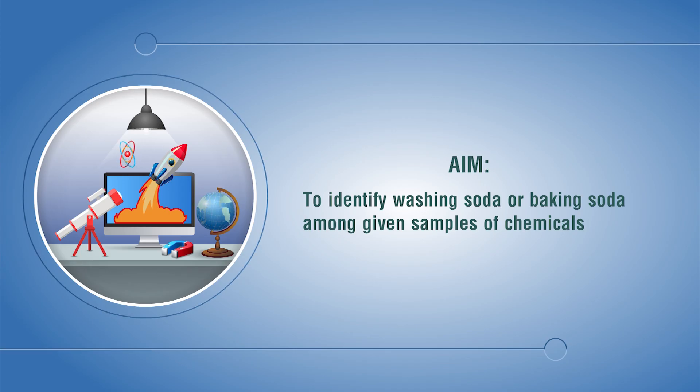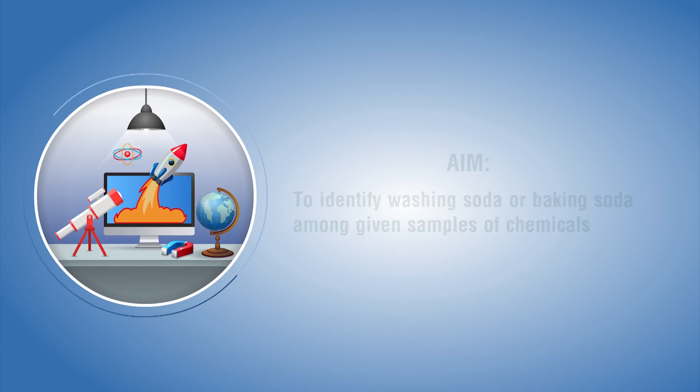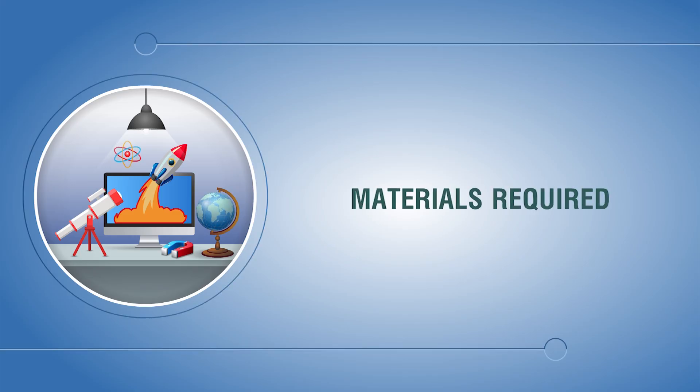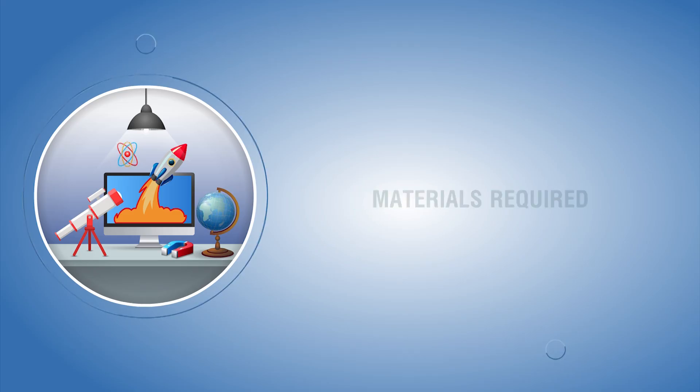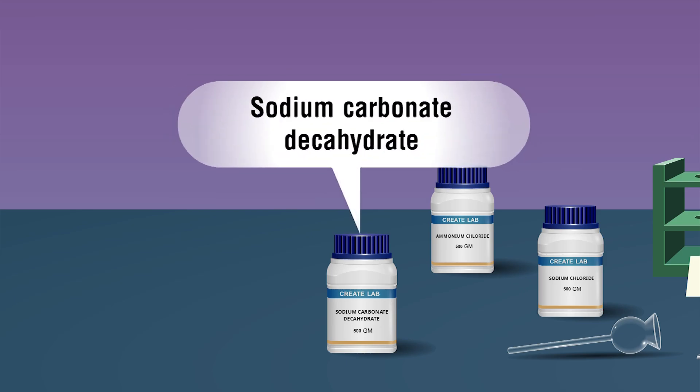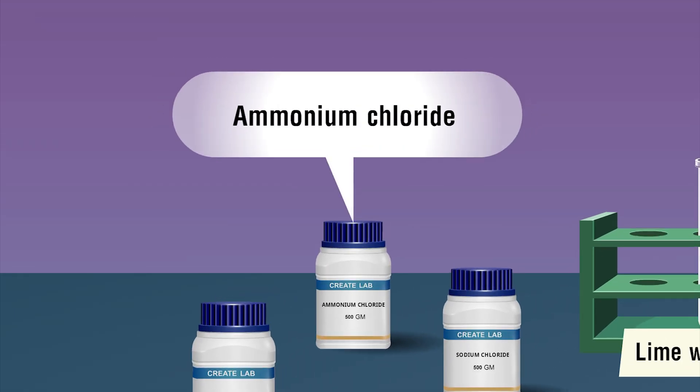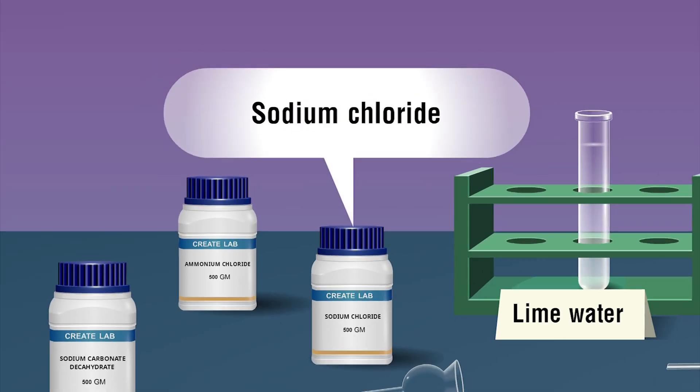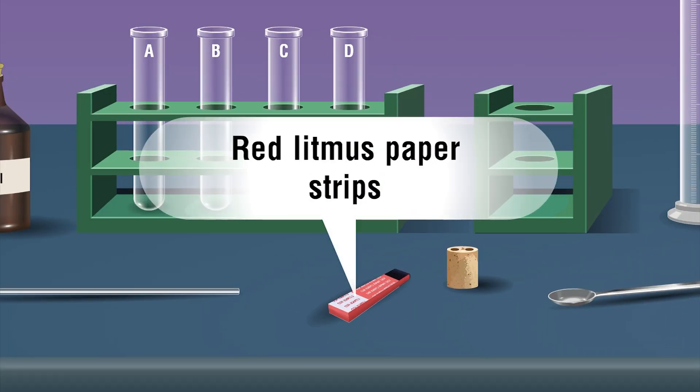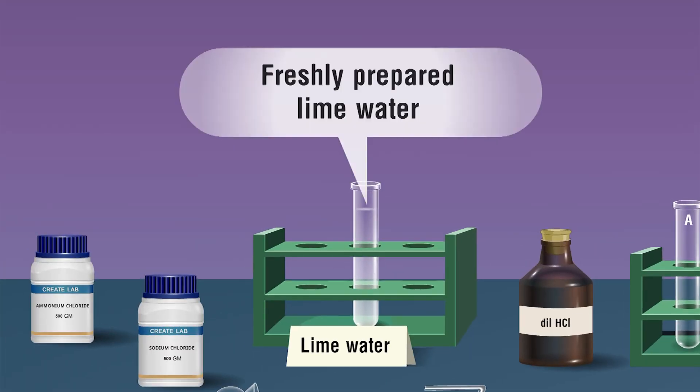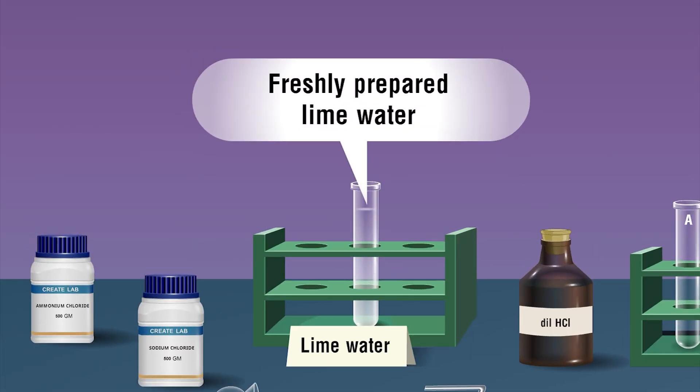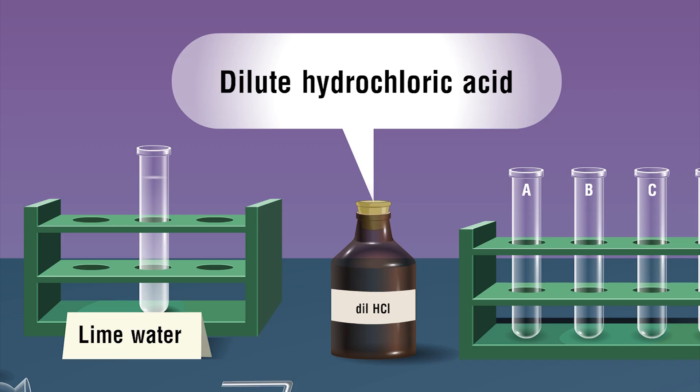To identify washing soda or baking soda among given samples of chemicals, the materials required are: sodium carbonate decahydrate (washing soda), ammonium chloride, sodium chloride, red litmus paper strips, freshly prepared lime water, and dilute hydrochloric acid.